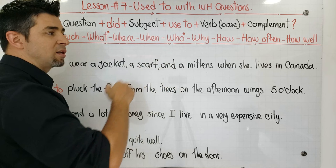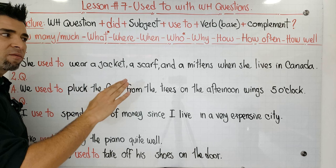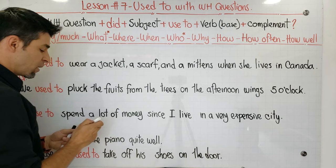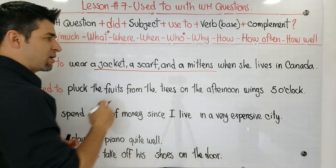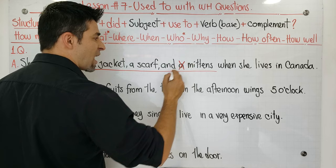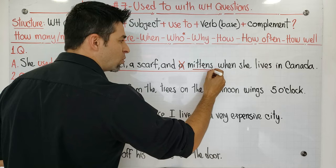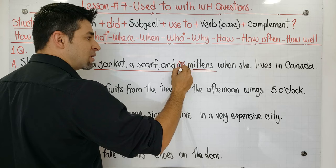Do you see any mistake here? Pause the video, analyze it, and try to identify it. In this part, we have a mistake — the article A before 'mittens.' Because 'mittens' is a plural noun, we cannot use 'a', which is for singular nouns. A jacket, a scarf, and a mittens — it sounds weird. So the sentence should be without the article before 'mittens.'